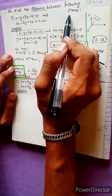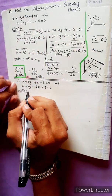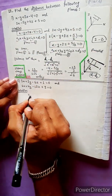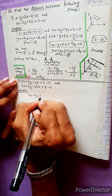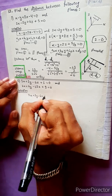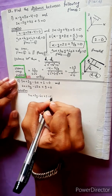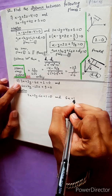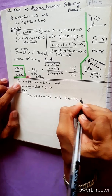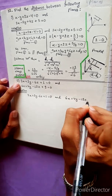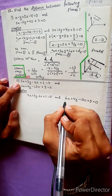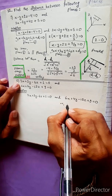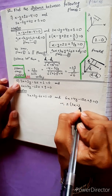Find the distance between the following planes. Plane 1: 3x + 2y - 6z + 1 = 0. Plane 2: 6x + 4y - 12z + 9 = 0. Taking 2 as common from Plane 2, we get 3x + 2y - 6z...